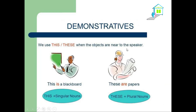Let's move on now to demonstratives. We have 'this' and 'these.' 'This' is the singular form and 'these' is the plural form. We use 'this' or 'these' when the objects are near the speaker. For example: this is a blackboard — the blackboard here is near to the speaker. 'This' is used with singular nouns for near objects.